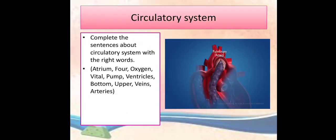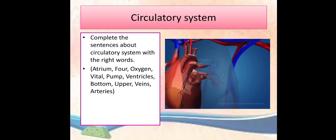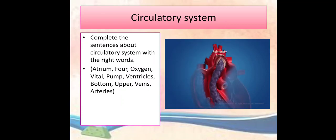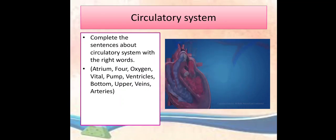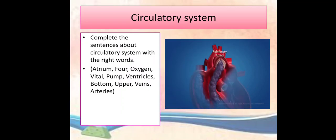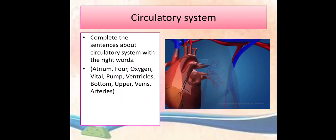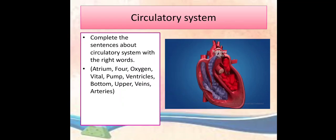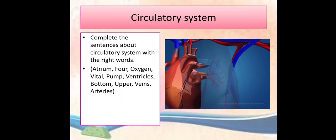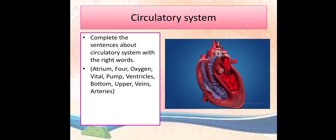The second life process is the circulatory system. Complete the sentences about the circulatory system with the right words. The words are: atrium, four, oxygen, vital, pump, ventricles, bottom, upper, veins, and arteries.